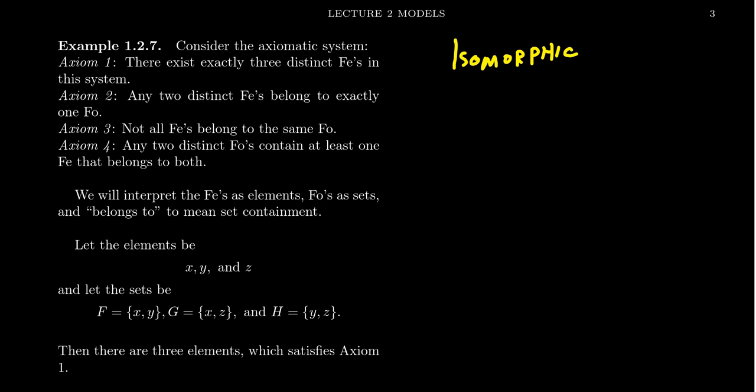And so if two models are isomorphic, so you have one model M, some other model N over here, what we're looking for is some type of one-to-one correspondence between the undefined terms such that any relationships between the undefined terms is preserved. And that's a little bit ambiguous. We might have to have talked about specific categories to make sense out of this. But in terms of the axiomatic method, isomorphic models are the same model.